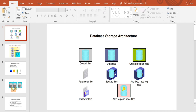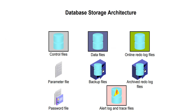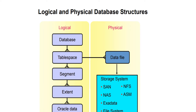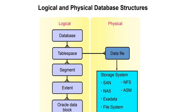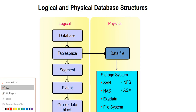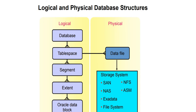While discussing logical and physical database structures, we will become more familiar with these files — which files can be categorized as physical and which as logical. We have a diagram with two columns: logical and physical. Under logical there are divisions like database, tablespace, segments, extents, and Oracle data blocks. On the physical side we have data files and the storage system.